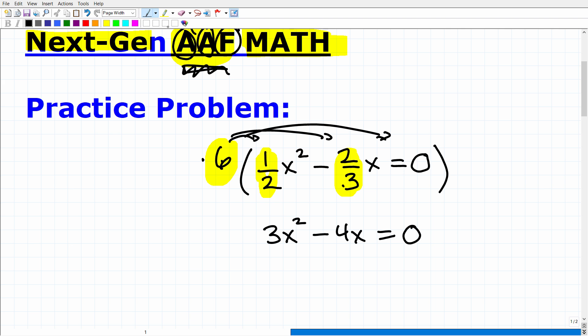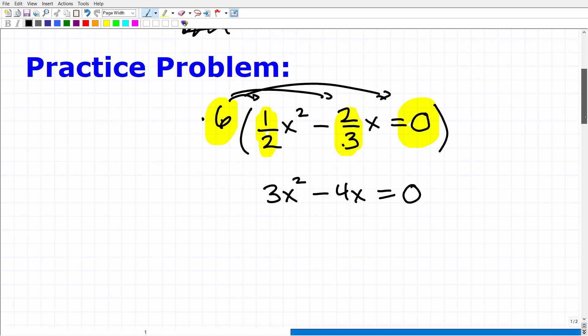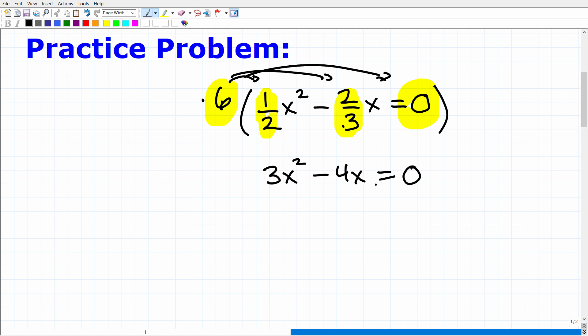This is why we love zero in equations. It makes our life a lot easier. Now what do we do at this point? Because this is equal to zero, we want to look for opportunities to factor. So can I factor this right here? Absolutely. I can factor an x out. So I got x times three x minus four is equal to zero. So x times three x is three x squared and x times four is four x. So here are the factors and the factors are equal to zero.